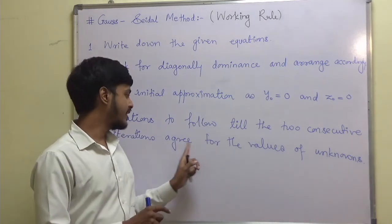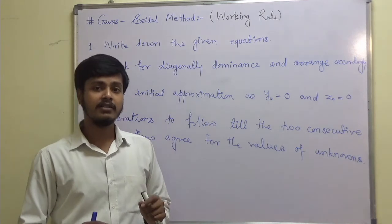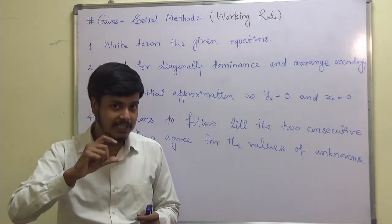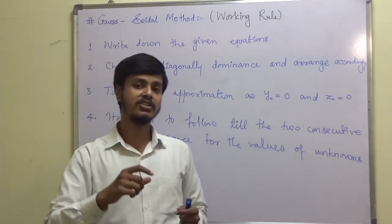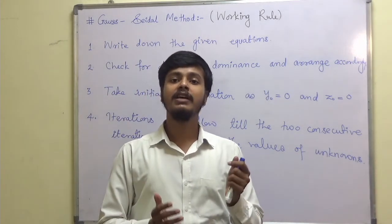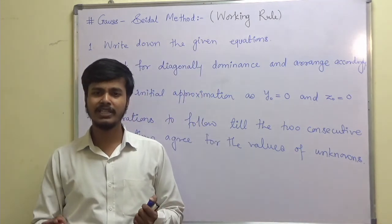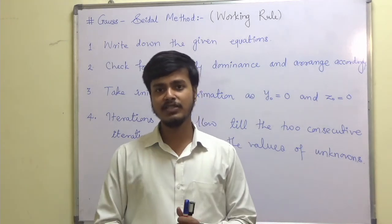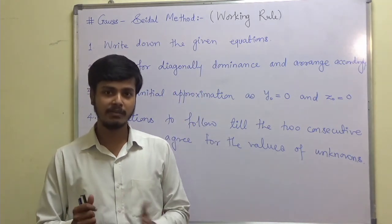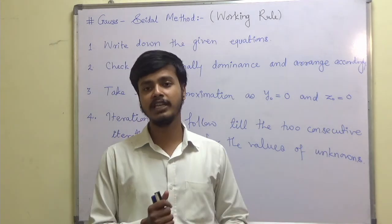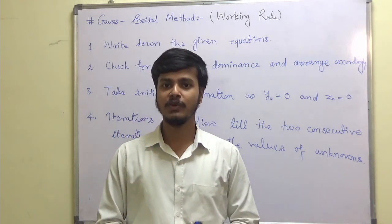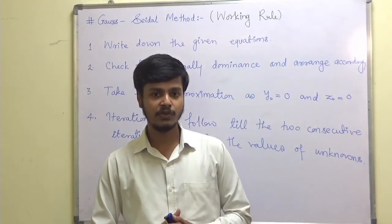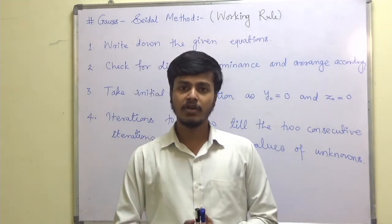What does 'agree for the values of unknowns' mean? Suppose when you solve the problems there are 6 iterations — if the 5th and 6th iterations give the same values of x, y, z, or a very negligible difference, you can stop there, terminate the process, and whatever values you are getting, write those down as the solution. So this is what we have in this learning video. Thank you for watching, keep learning, keep enjoying, thank you.